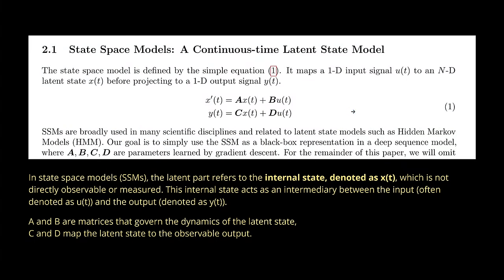Here are the equations. What's most important is that the state space model maps a one-dimensional input signal u(t) to an N-dimensional latent space x, before projecting this latent space to a one-dimensional output signal y. The set of equations describing the dynamical system is a linear case with four matrix combinations: A, B, C, and D.